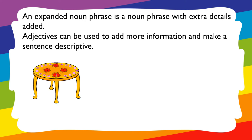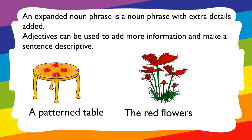We need to use expanded noun phrases in our writing all the time to add more details and descriptions to our nouns. For example, 'a table' becomes 'a patterned table' — I have used an adjective to expand the noun phrase. Similarly, 'the flowers' becomes 'the red flowers.' From 'a table' to 'a patterned table,' and from 'the flowers' to 'the red flowers.'